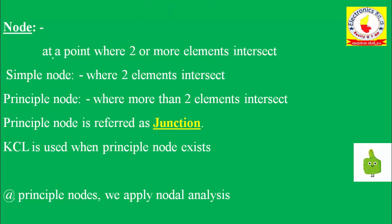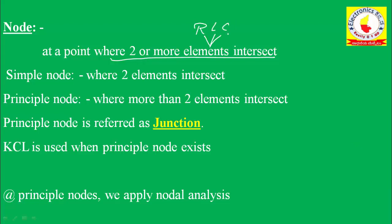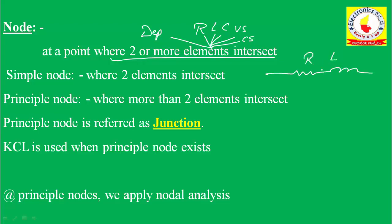First, what do you mean by a node? At a point where two or more elements intersect — elements can be resistors, inductors, capacitors, voltage sources, current sources, or dependent elements. A simple node is where exactly two elements intersect. A principal node is where more than two elements intersect, meaning three or more elements join at that point.